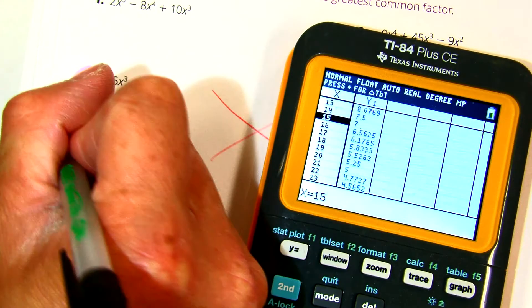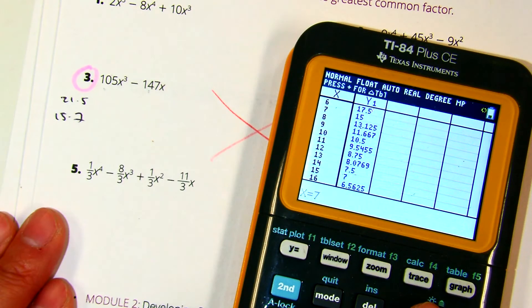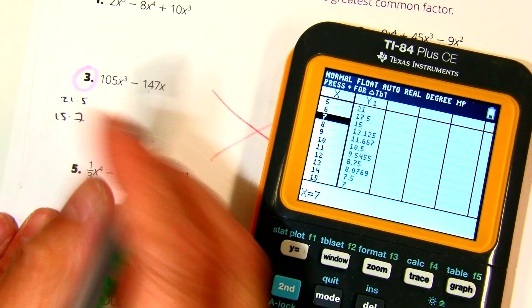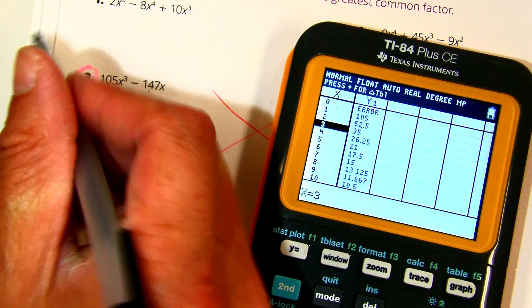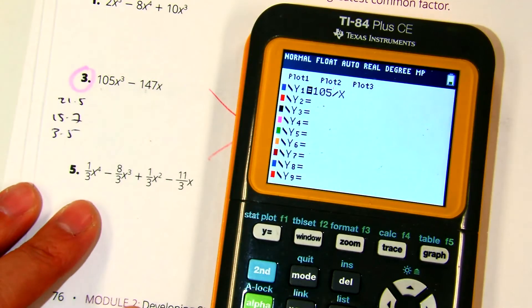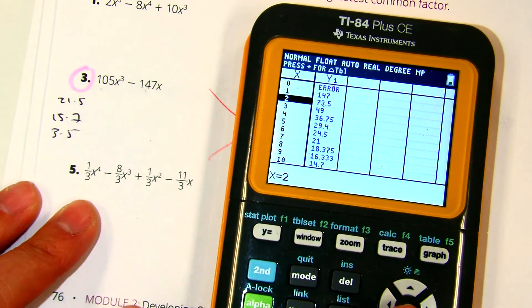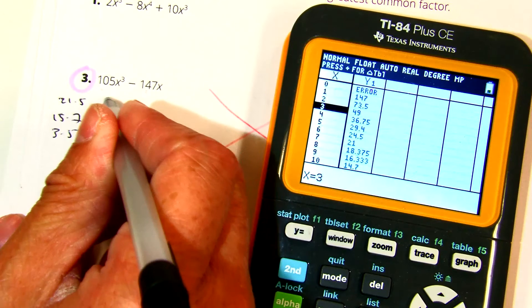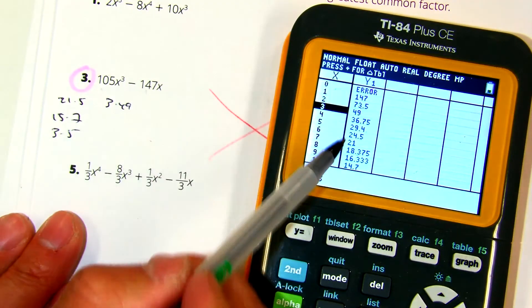15 and 7. 7 times 15 is the same thing. 5 and 21. 3 and 35. And then I can do the same thing for 147. 3 and 49. 1 and 47. 21 and 7.